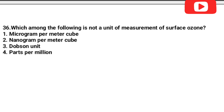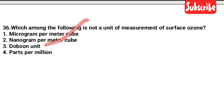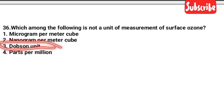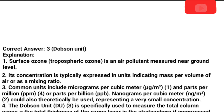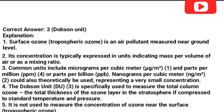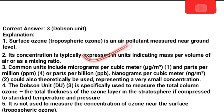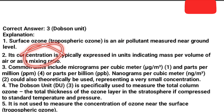Next question: Which among the following is not a unit of measurement of surface ozone? Options: microgram per meter cube, nanogram per meter cube, Dobson unit, parts per million. The answer is Dobson unit — that is not a measurement of surface ozone. Surface ozone is an air pollutant measured near ground level; its concentration is typically expressed in units indicating mass per volume or mixing ratios.